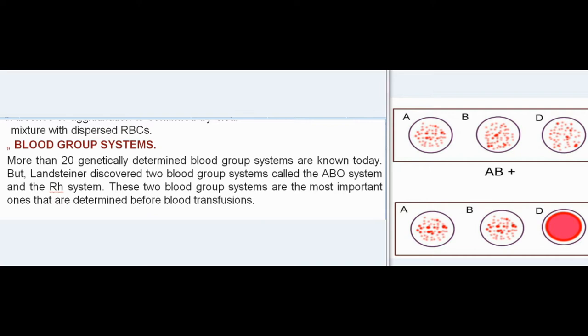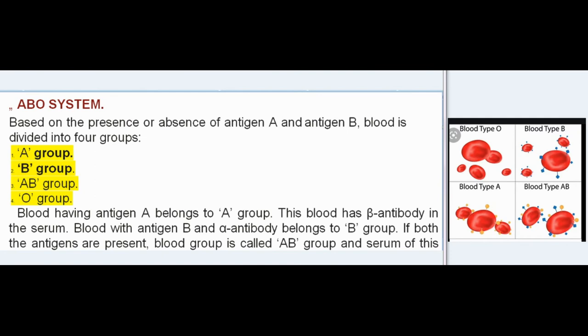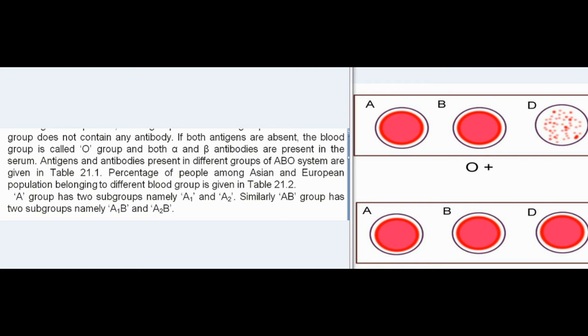Blood Group Systems: More than 20 genetically determined blood group systems are known today. Landsteiner discovered two important systems: the ABO system and the Rh system, which are the most important ones determined before blood transfusions. ABO System: Based on the presence or absence of antigen A and antigen B, blood is divided into four groups. Blood with antigen A belongs to Group A, with beta antibody in serum. Blood with antigen B and alpha antibody belongs to Group B. If both antigens are present, it is Group AB with no antibodies. If both are absent, it is Group O, with both alpha and beta antibodies in serum.